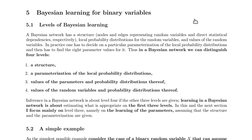Bayesian Learning for Binary Variables. So far we have assumed that the network structure and the probabilities are given and we have just done inference. However, there are more levels on which a decision has to be made: how to build the network and how to choose the parameters.